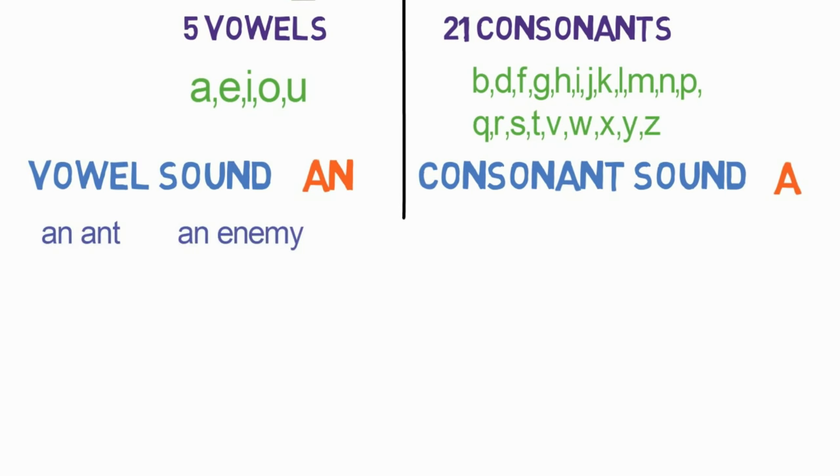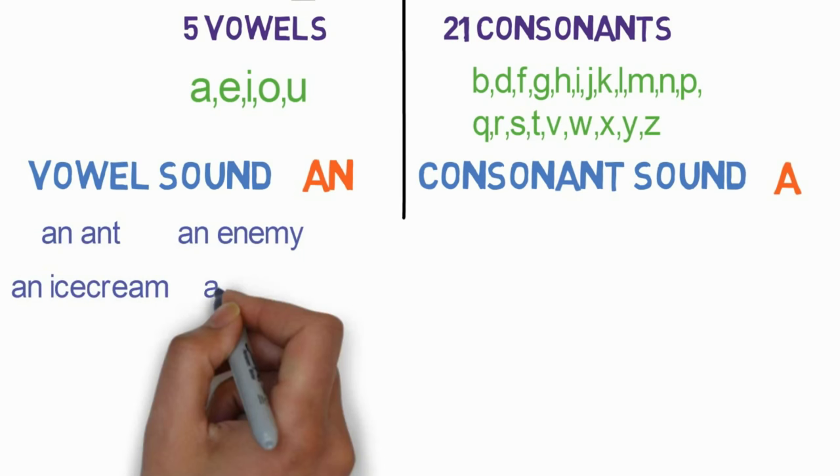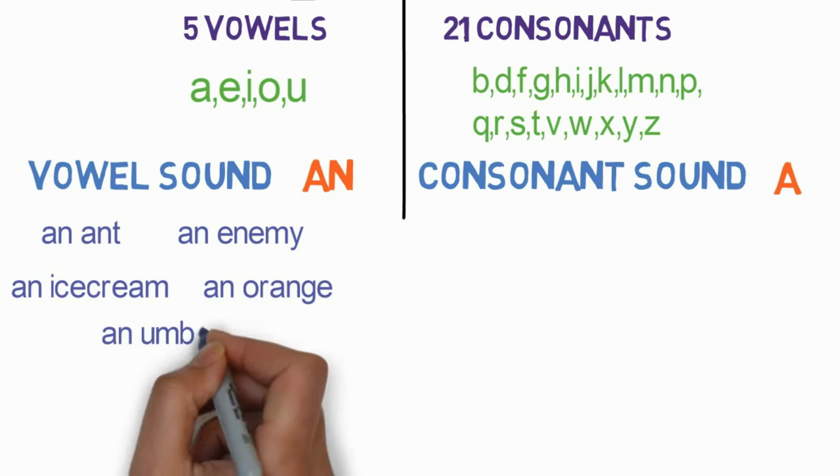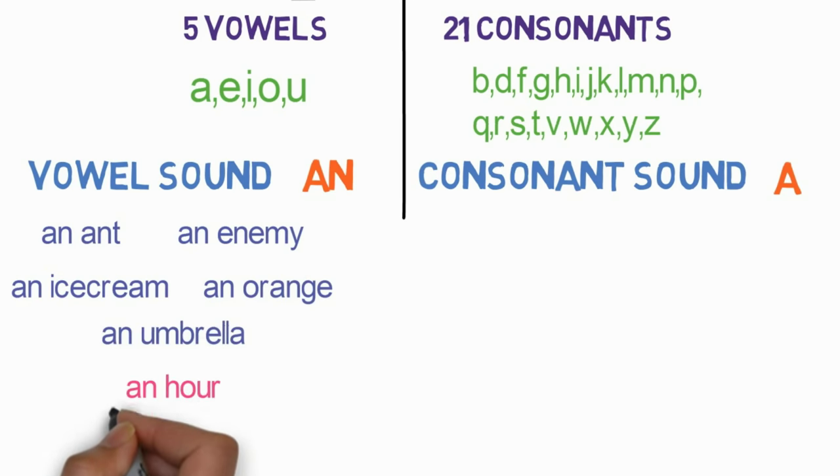An ant, an enemy, an ice cream, an orange, an umbrella, an hour. Notice the word 'hour.' As the H is silent here, 'hour' starts with a vowel sound. So 'an' is used before the word 'hour.'